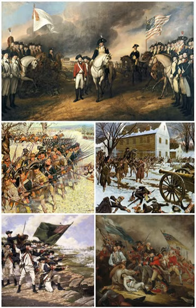Meanwhile, the vast majority of Burgoyne's Indian support abandoned him and Howe informed Burgoyne he would launch his campaign on Philadelphia as planned, and would be unable to render aid. Burgoyne decided to continue the advance. On September 19, he attempted to flank the American position, and clashed at Freeman's Farm. The British won, but at the cost of 600 casualties. Burgoyne then dug in, but suffered a constant hemorrhage of deserters, and critical supplies were running low.